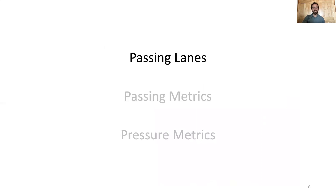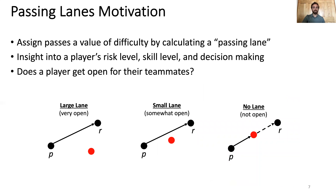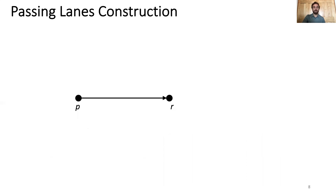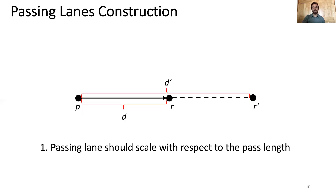First, I'll explain our metrics for passing lanes. Our goal is to assign passes a degree of difficulty by calculating the available passing lane. This lane helps identify things like a player's risk level, their skill level, and if they actually get open for their teammates. Being open means being in a position to receive a pass. In the diagrams at the bottom, suppose we have a passer P and a receiver R, and an opponent shown in red. As the opponent moves closer to the direct pass, R becomes less available until eventually they're not open at all. Our first requirement is that a passing lane should scale with respect to the pass length.